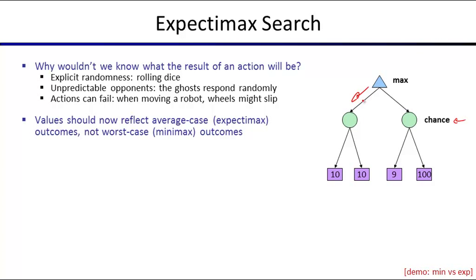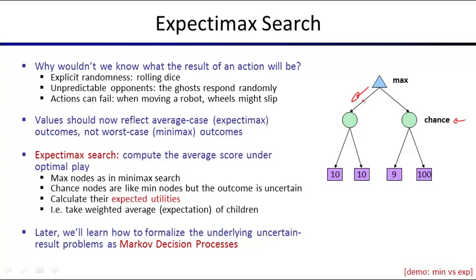In robotics, you say: I don't know what's going to happen if I apply this control input. I'm going to model it as an action followed by a chance node. If that's the case, we might not want to compute the minimax value, because that assumes the worst, and it's not the case that the worst always happens. So we'll do something new called expectimax search, which is sometimes simpler than minimax.